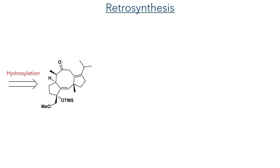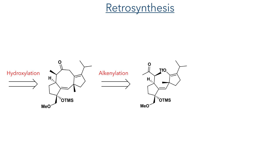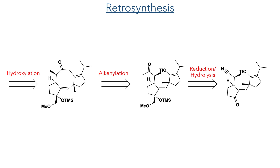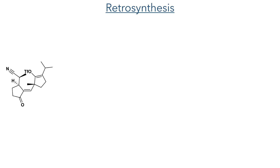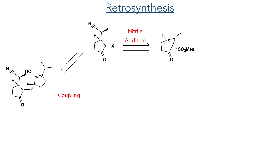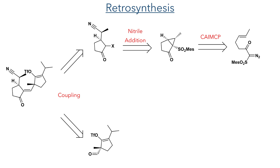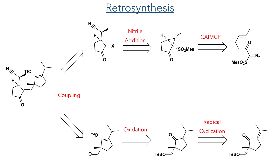Working back from cotylenol, this was produced by hydroxylation, alkenylation, and reduction and hydrolysis from a bicyclic intermediate. This intermediate was generated using a convergent synthesis coupling two reacting partners. The first partner was generated by a nitrile addition to a bicyclic compound bearing a cyclopropyl group, which in turn was generated using a catalytic asymmetric intermolecular cyclopropanation. The other coupling partner was derived from oxidation of a cyclopentanone which could be generated using a radical cyclisation.